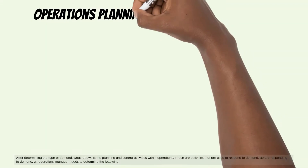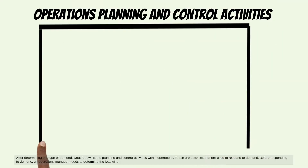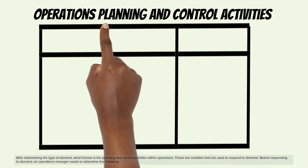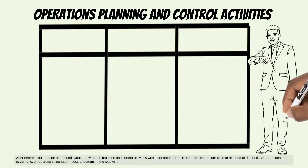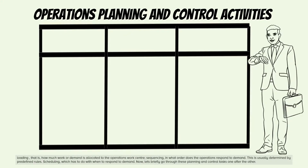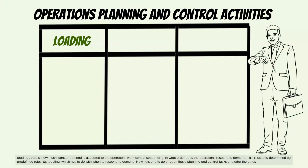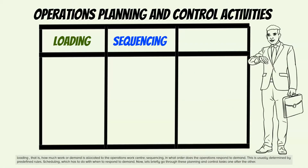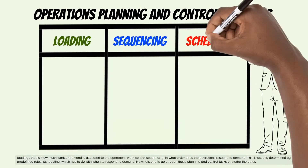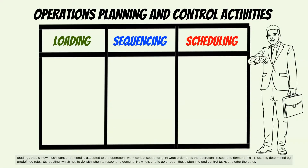After determining the type of demand, what follows is the planning and control activities within operations — activities used to respond to demand. Before responding to demand, an operations manager needs to determine the following: loading, that is, how much work or demand is allocated to the operations work center; sequencing, in what order does the operation respond to demand, usually determined by predefined rules; and scheduling, which has to do with when to respond to demand. Let's briefly go through these planning and control tasks one after the other.